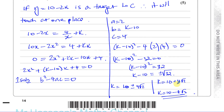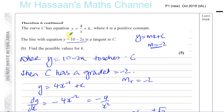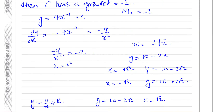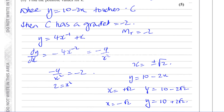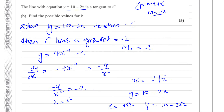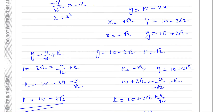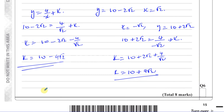So there are two ways of doing that question: using the discriminant condition, or using the fact that the gradient of the curve equals minus 2, the same as the tangent. Both methods give the same result.